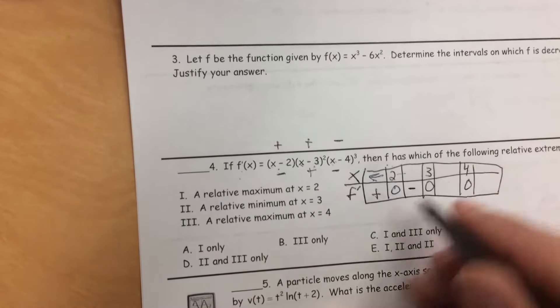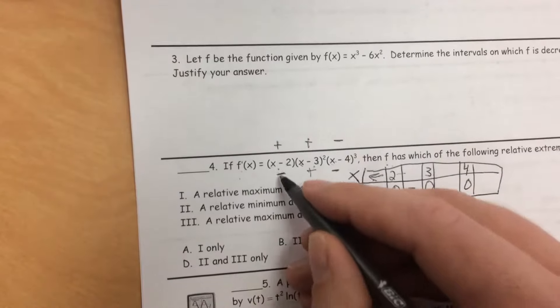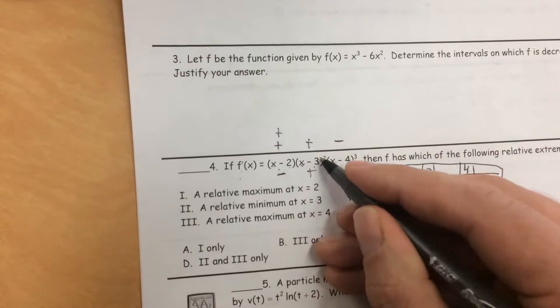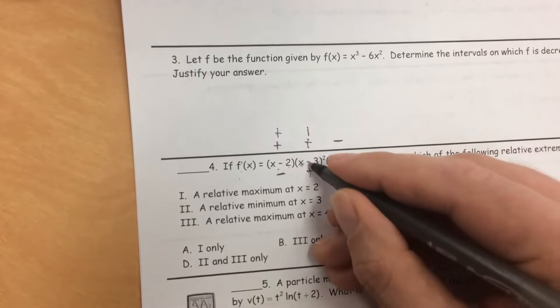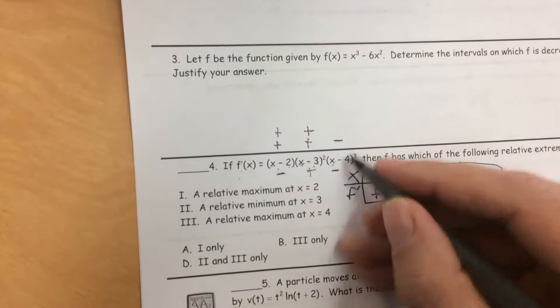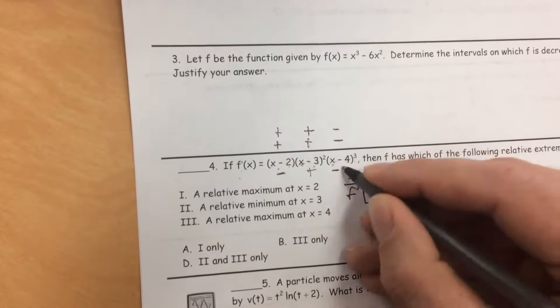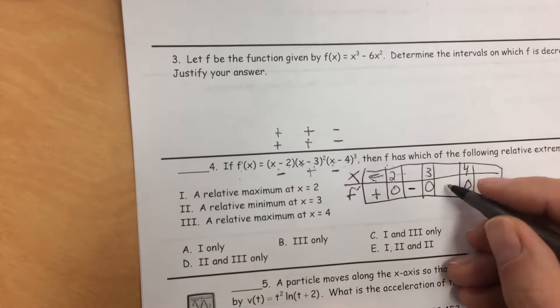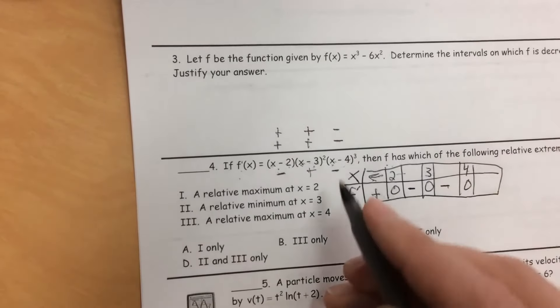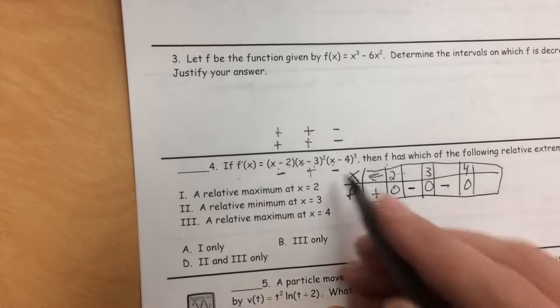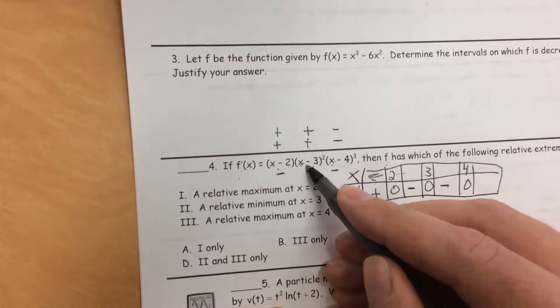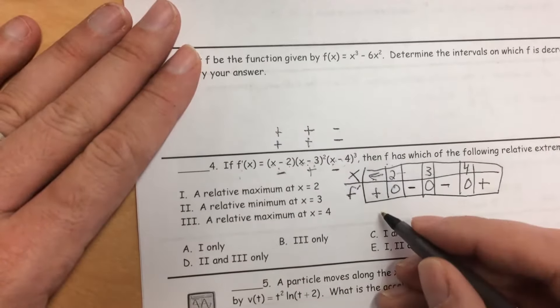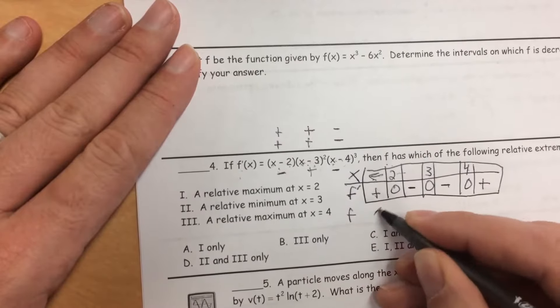In between 3 and 4, I'll pick a number like 3.5. 3.5 minus 2 is positive. 3.5 minus 3 squared is positive. 3.5 minus 4 is negative, and a negative cubed is negative. So a positive times a negative is a negative. And last, when x is greater than 4, we get a positive times a positive times a positive, which is a positive.